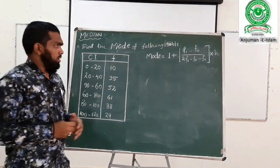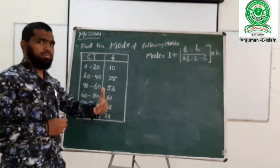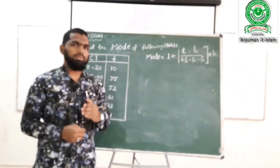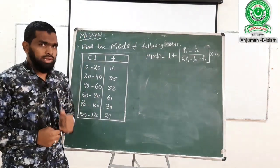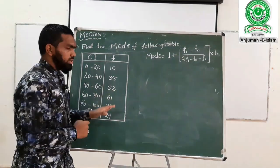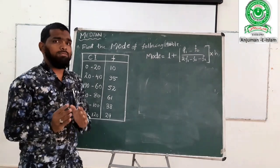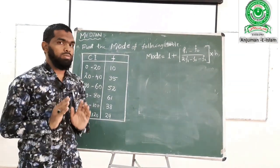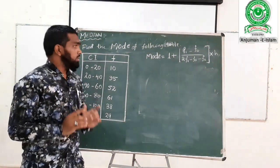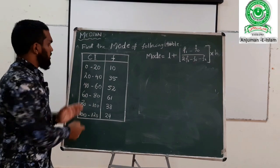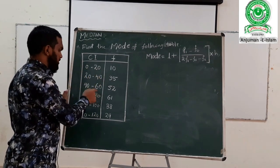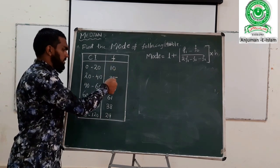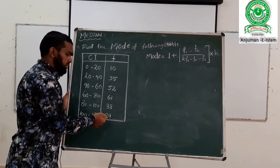Dear students, in your previous lecture we discussed mean and median. Now we come to mode. Mode is the third component of statistics. It is very easy to understand. The class intervals given are: 0–20, 20–40, 40–60, 60–80, 80–100, 100–120. The frequencies are: 10, 35, 52, 61, 38, and 29.